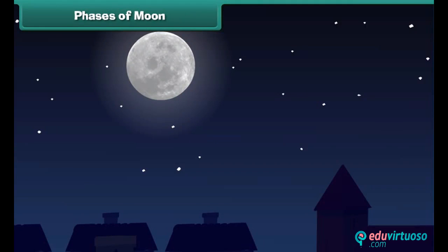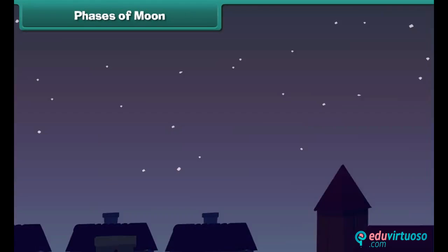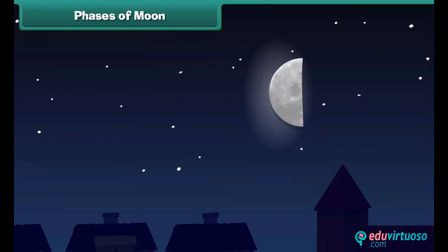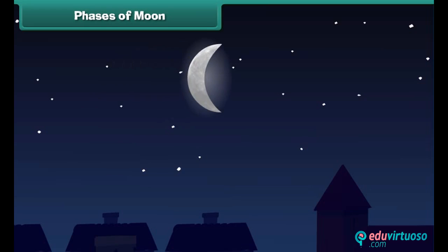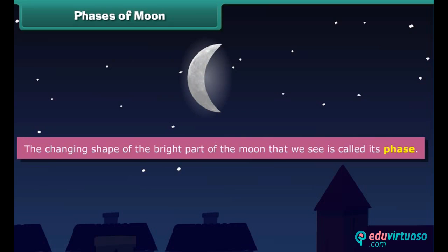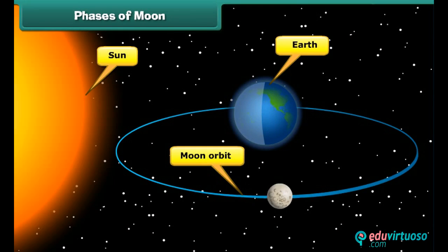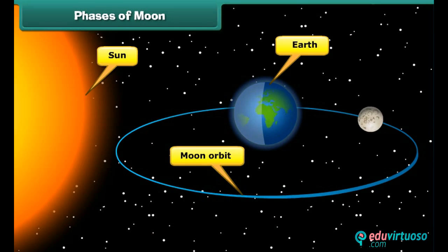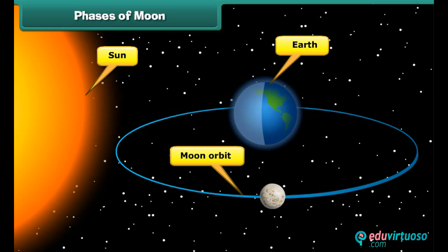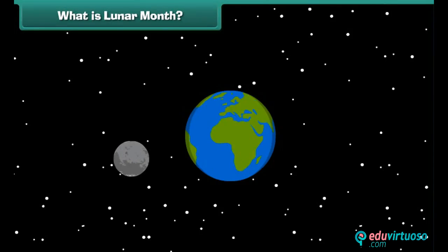You must have noticed that the moon does not always appear as a perfect circle. This is because it goes through phases. The changing shape of the bright part of the moon that we see is called its face. Sunlight strikes the moon at different angles throughout its journey around the Earth. The part of the moon facing the Sun is lit, whereas the part facing away from the Sun is in darkness.